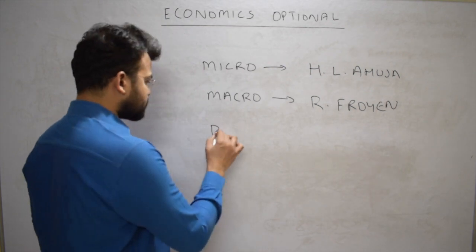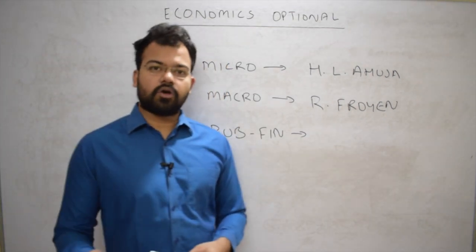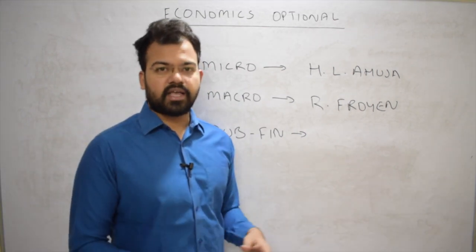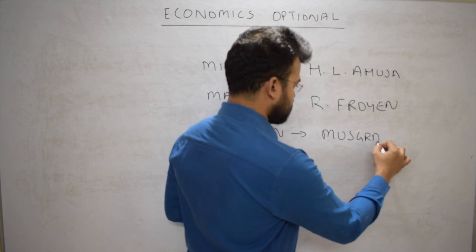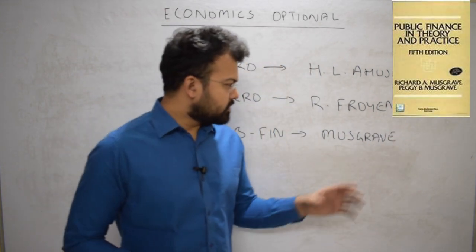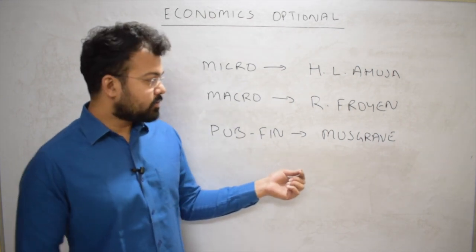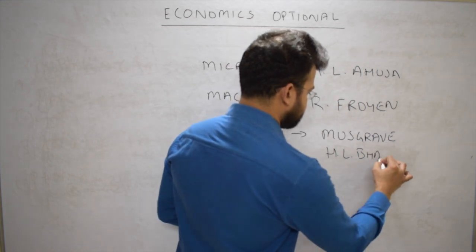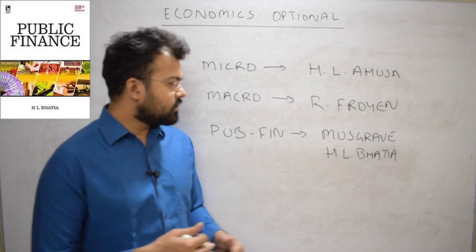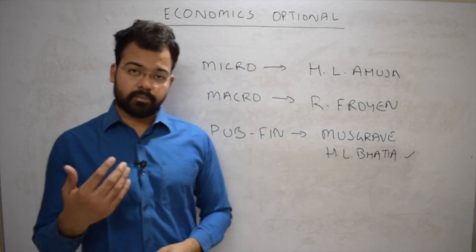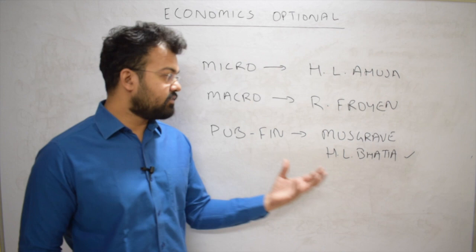For public finance — which is not listed separately in the optional syllabus alongside money and banking — there is one key book: Musgrave and Musgrave. This is the best book but is written from a foreign author's perspective. If you find it difficult, you can refer to Chal Bhatia, which is written from India's perspective. According to me, that book is relatively more beneficial. You can refer to either, as the concepts in both are fantastic.